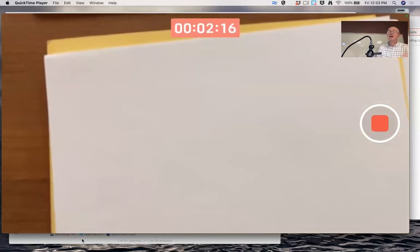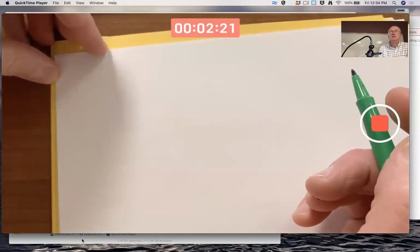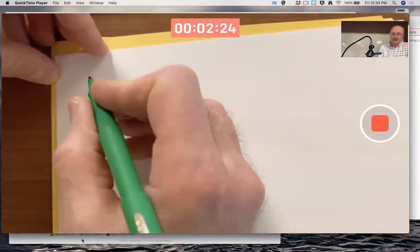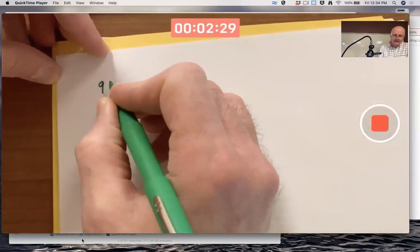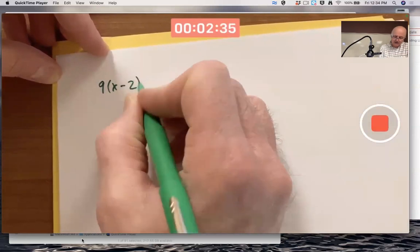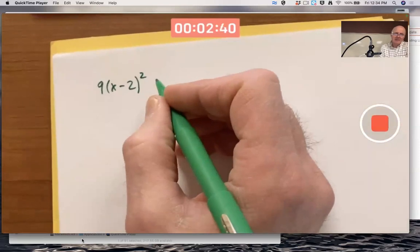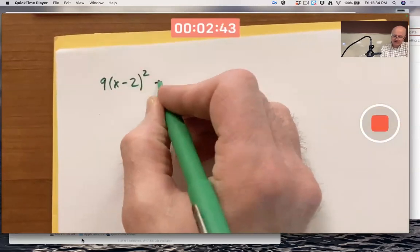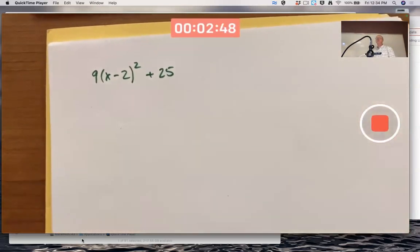One way is to make sure that it has complex number solutions, not real numbers. One way to do that is to write down, say, a positive number times x plus or minus something squared. Let's say 9 times (x - 2)² plus some other positive number. And I'm purposely picking these numbers to be perfect squares because it makes the algebra work out more nicely.